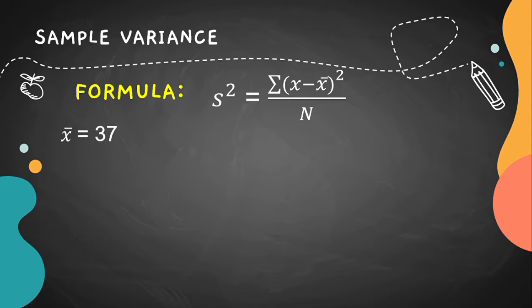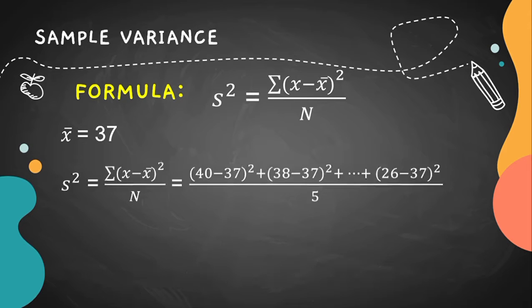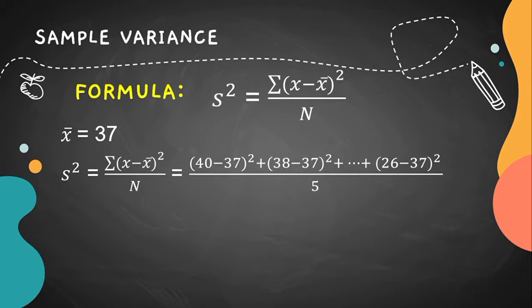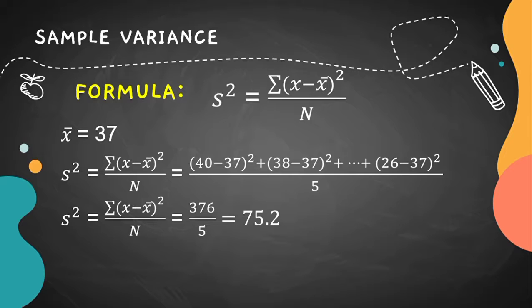Our sample mean here is 37. So, 40 minus 37 quantity squared, plus 37 quantity squared, plus 38 minus 37 quantity squared, until we get to the last given number which is 26 minus 37 quantity squared, all over 5. The summation of X minus X-bar quantity squared is 376 over 5.